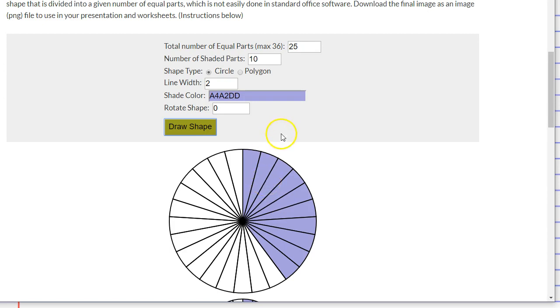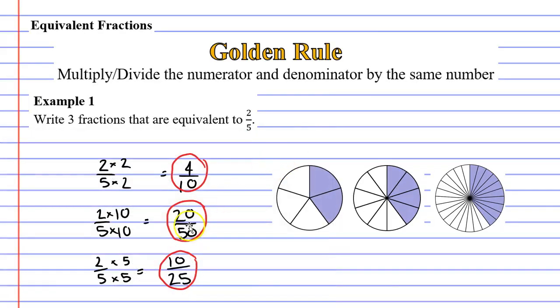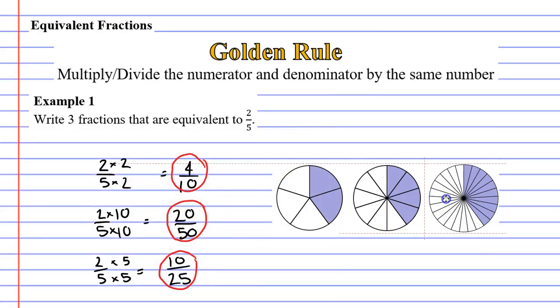I think the other one was 20/50. I can't do 20/50 on that program. It just doesn't like to cut our circle into that many pieces. But you can see by looking at it visually that this works, that in all scenarios, we got equivalent fractions.